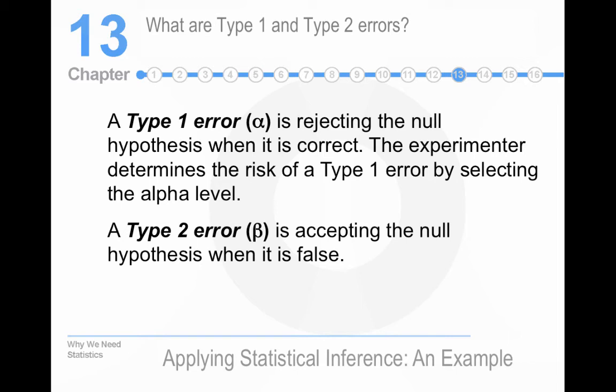So, Type 1 error is rejecting the null hypothesis when it's actually correct. So, the probability of rejecting your null hypothesis when it is, in fact, correct is equal to alpha. So, if you set a more stringent level for alpha, you decrease your chances of a Type 1 error.